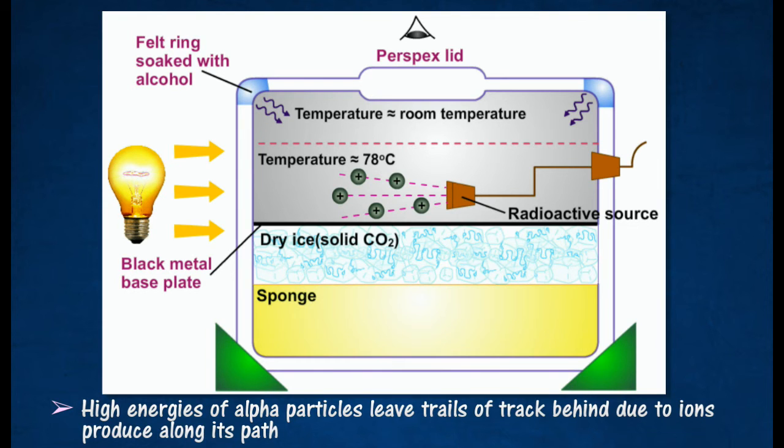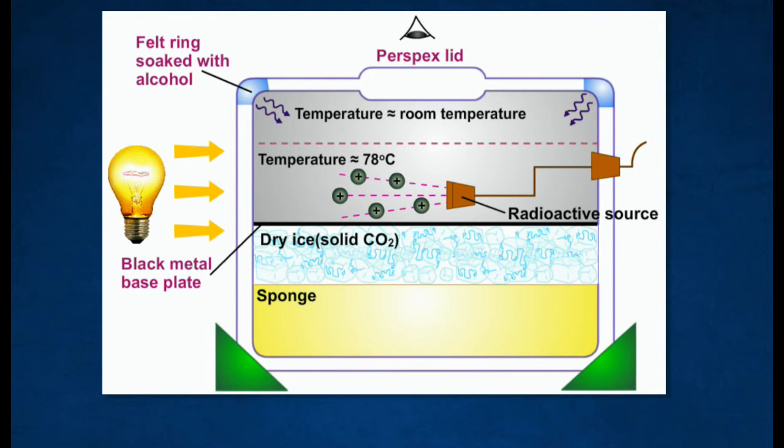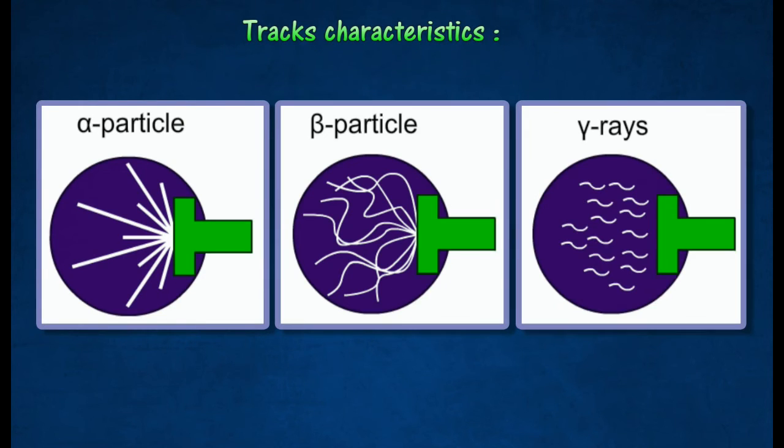Tracks can be seen through the transparent Perspex lid. Different radiations produce different radioactive tracks as seen in a cloud chamber.